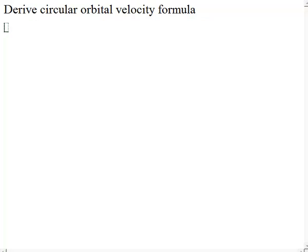In this video I'm going to derive the circular orbital velocity formula. Gravity keeps satellites in orbit, and the force due to gravity is G times the mass of the object being orbited times the mass of the orbiting object divided by the distance squared.